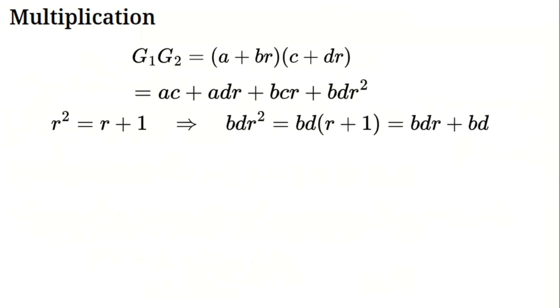Multiplication. Multiplication brings R squared equals R plus 1 into action. Take G1 a plus BR times G2 C plus DR. Distribute. That's AC plus ADR plus BCR plus BDR squared. Now R squared is R plus 1. Replace BDR squared with BD times R plus 1, which is BDR plus BD. Collect terms.